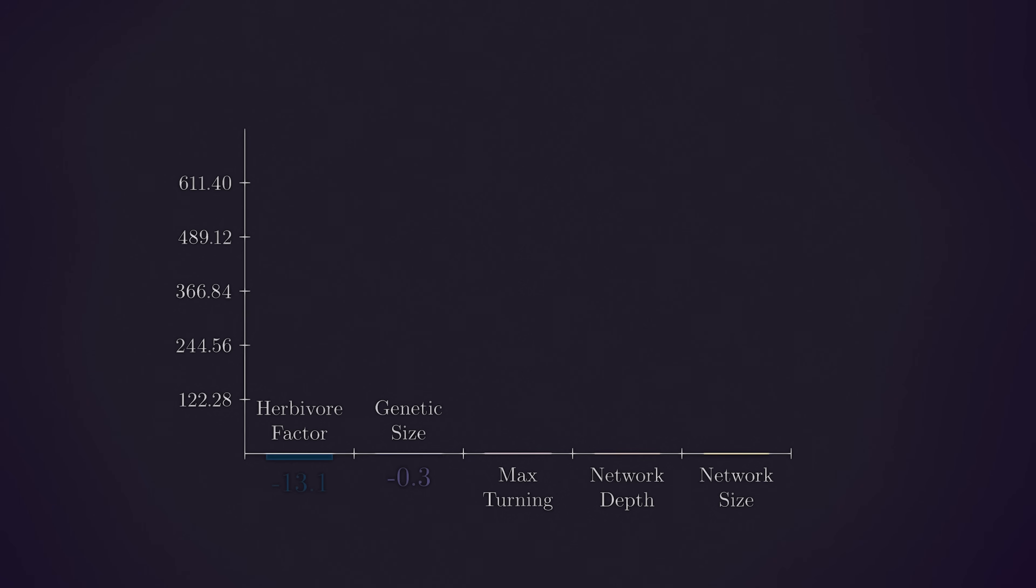Moving on to the next trait, here we have genetic size. This trait controls how large the maximum size of the protozoa is. In this case, we can see that the change is basically zero. But again, there was variation throughout the run not captured here.